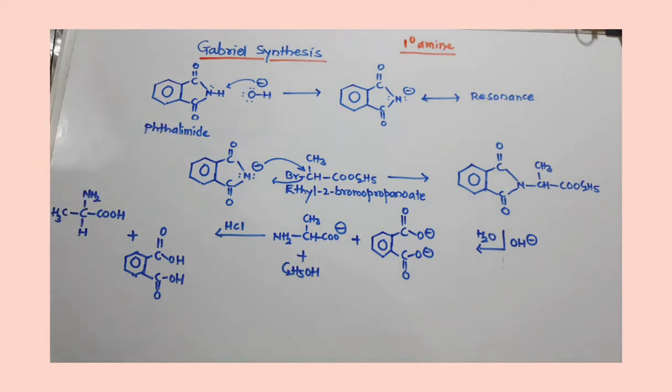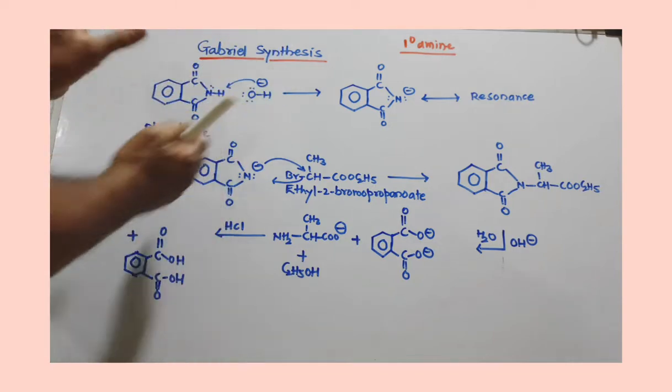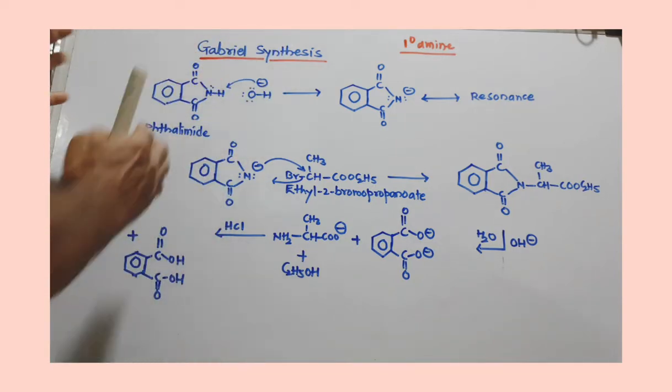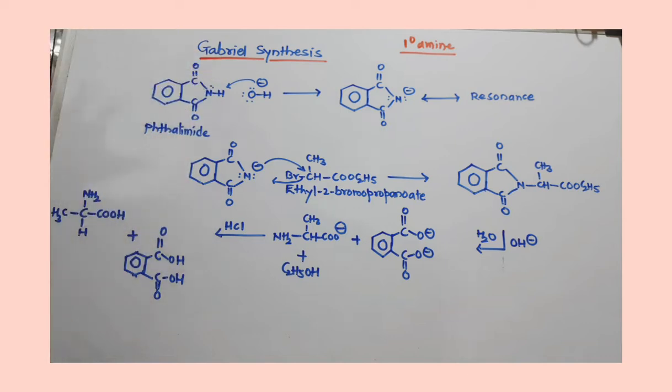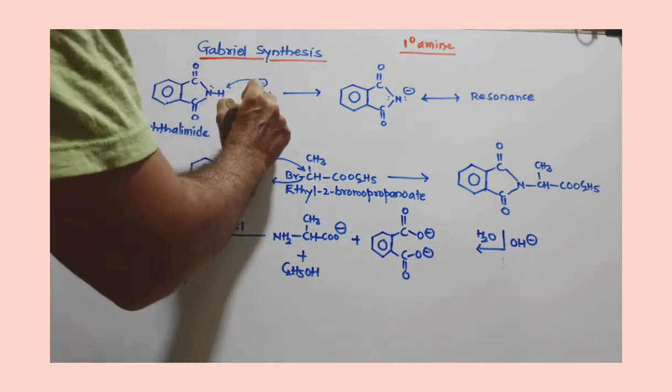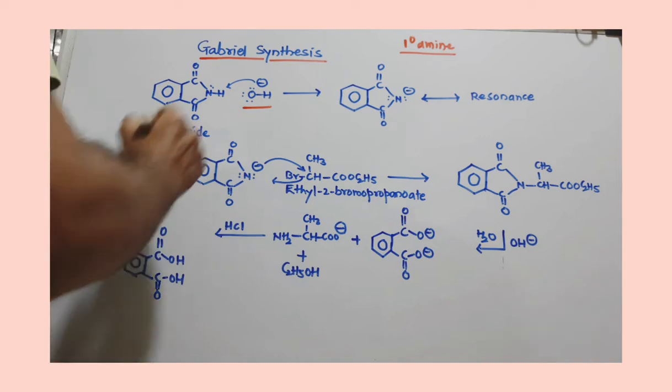When we use alpha-halo-ester, we can prepare alpha amino acid. Let us see how. For this synthesis we need phthalamide. This phthalamide is actually prepared from phthalic acid. Now see here, we are using base hydroxyl ion.